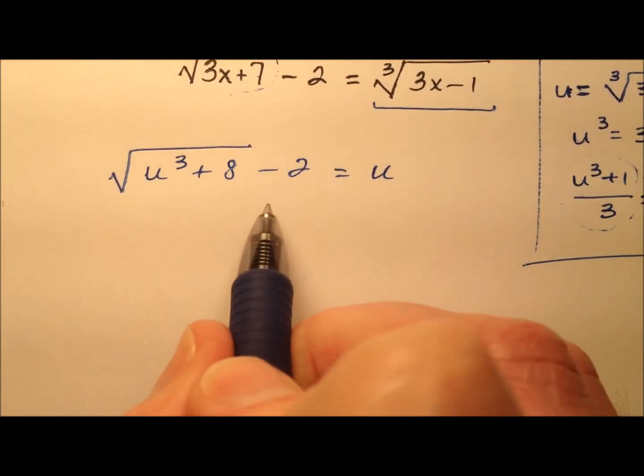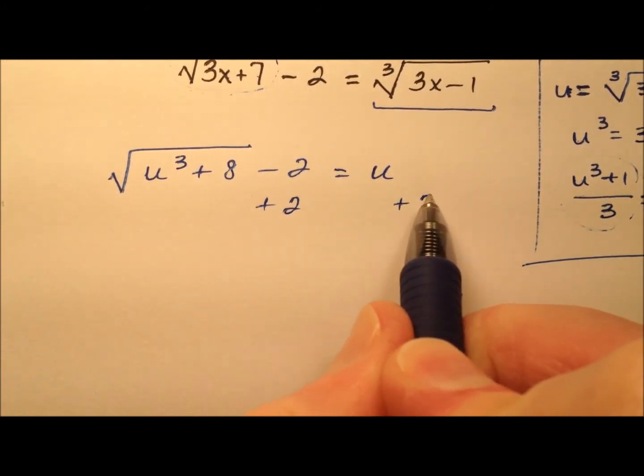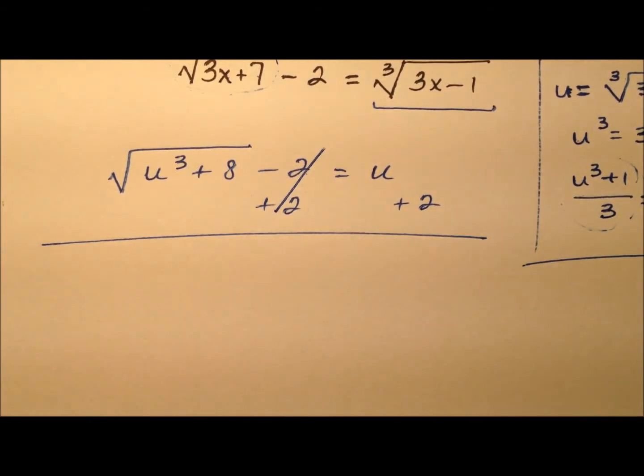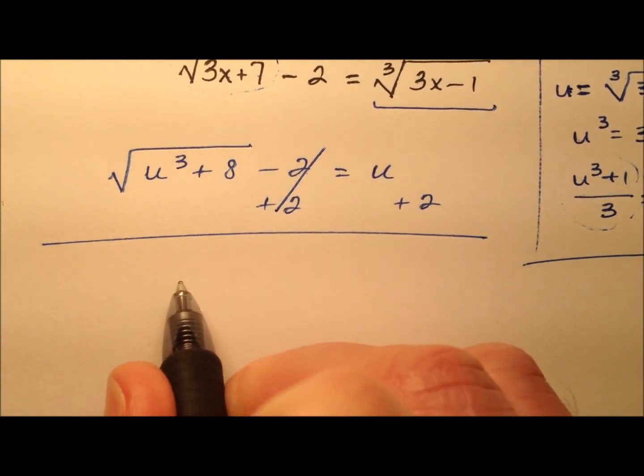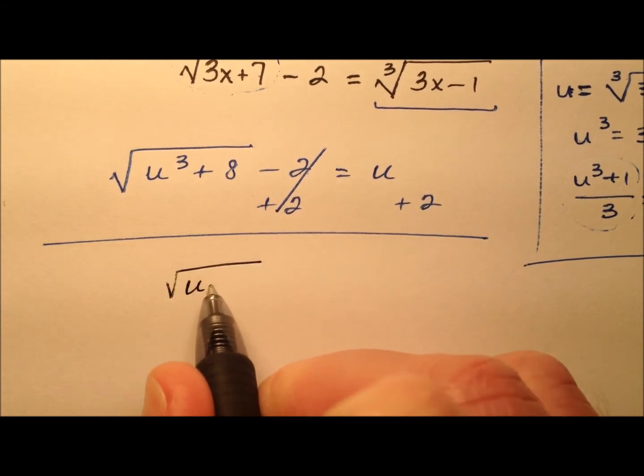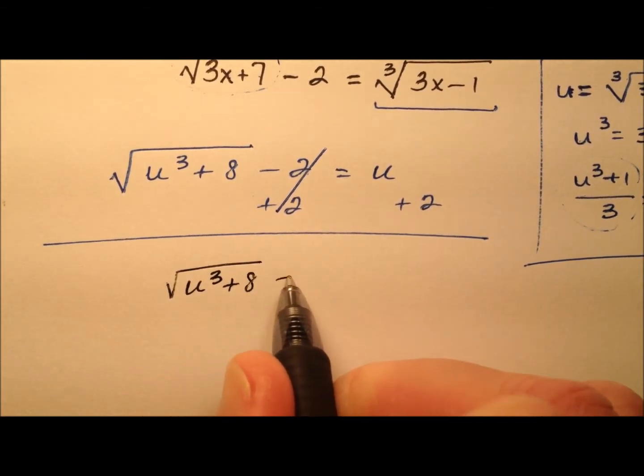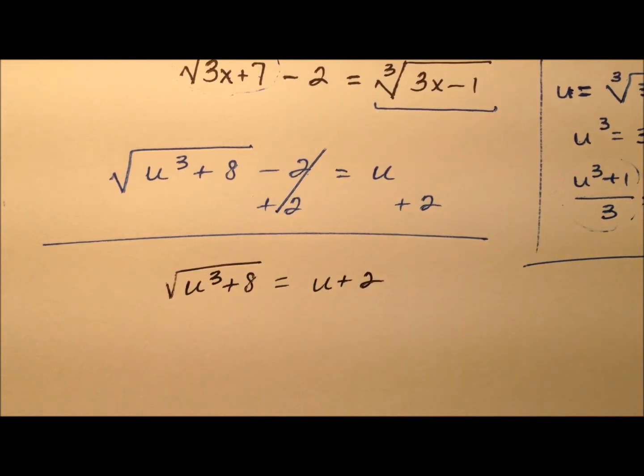And then one more thing, let's go ahead and add 2 to both sides to get that guy away from that radical. So we have this square root term isolated, this square root of u cubed plus 8, and it equals u plus 2.